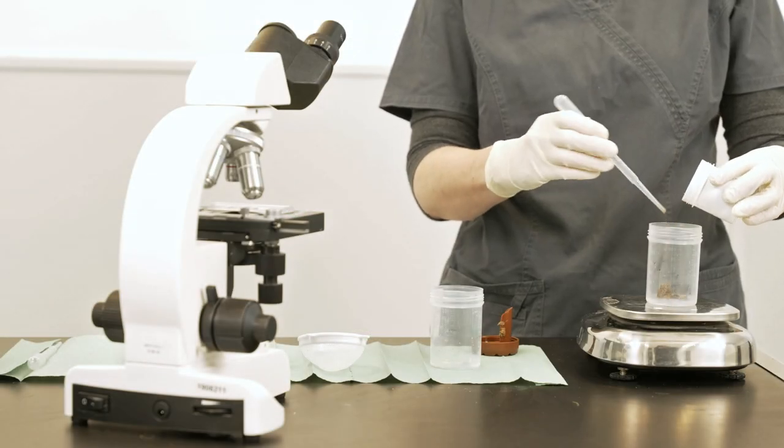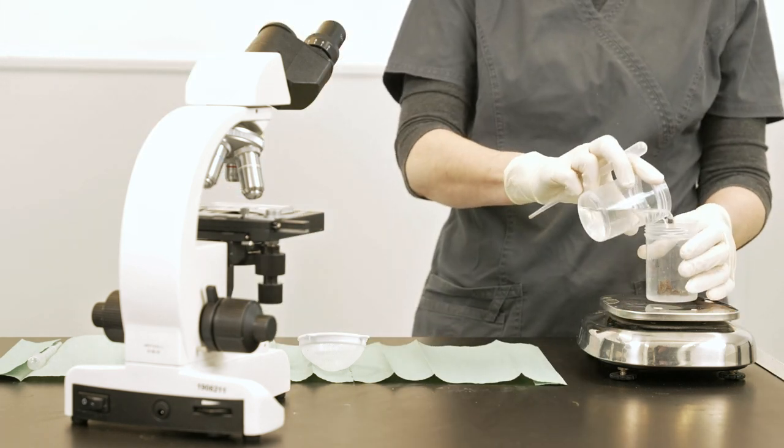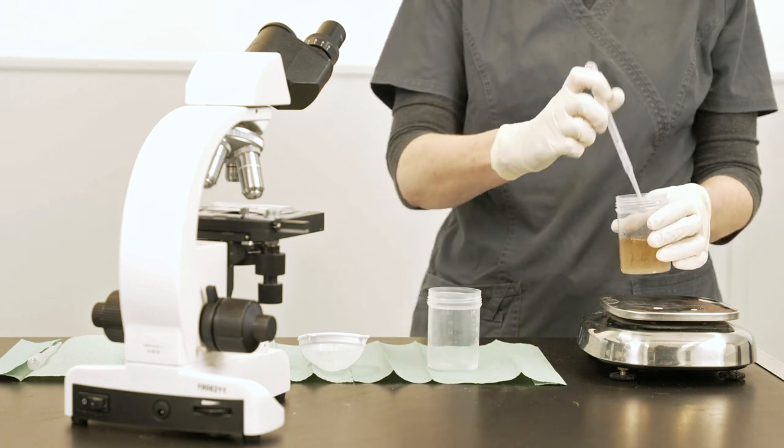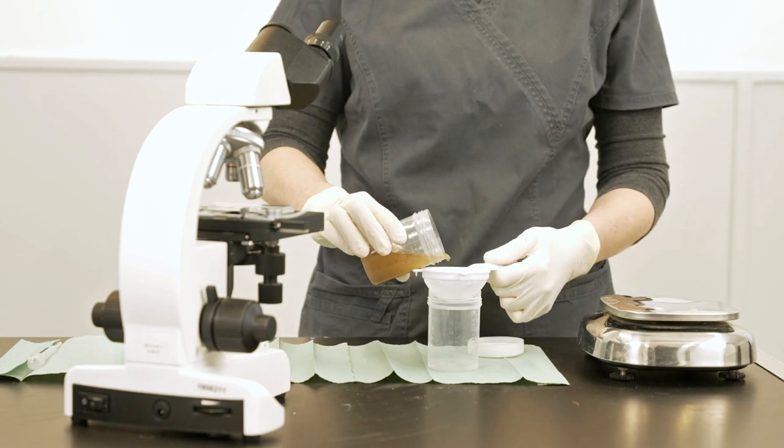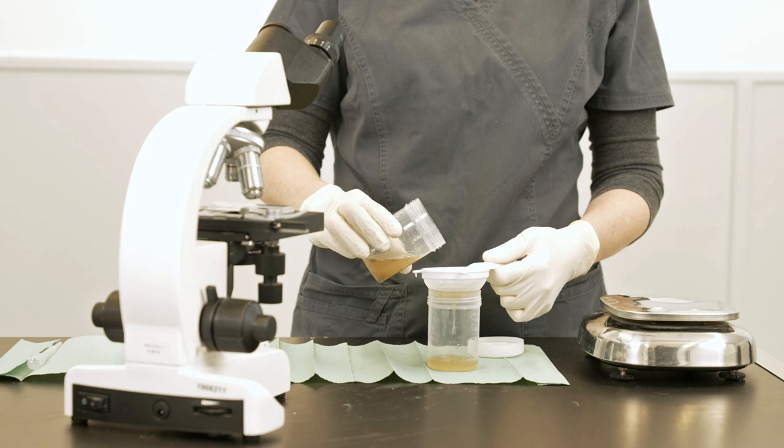It's best practice to test for the presence of worms rather than to treat for worms every couple of months. The way to test is by a worm egg count, which looks at a sample of the bird's poo and tells us if worm eggs are present. This gives us essential information on which parasites are present and how many parasites are present.